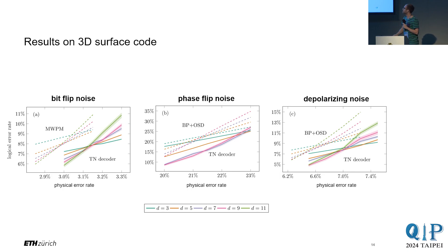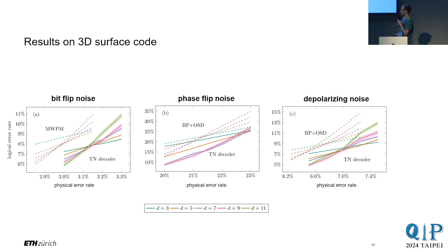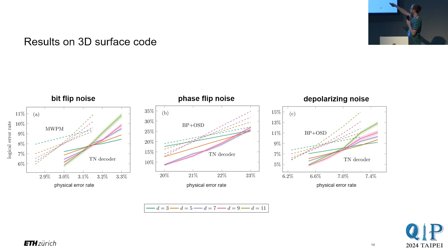To give some numerics: we tried the tensor network decoder on the 3D surface code for bit-flip, phase-flip, and depolarizing noise. Bit-flip and phase-flip are different because for the 3D surface code there's no symmetry when exchanging X and Z. We compare with matching, which realizes the minimum weight decoder — the optimal decoder without degeneracy. We can significantly outperform matching. We don't reach the optimal threshold of around 3.3%, but we're somewhere in the middle between matching and optimal for phase-flip noise and depolarizing. We also compare with state-of-the-art decoders, which in both cases are BP-OSD, and in both cases we outperform the state-of-the-art.